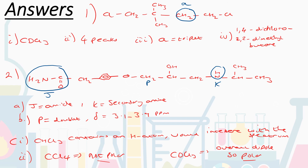For the IUPAC name of compound J: find the longest carbon chain — four carbons, so based on butane. Numbering from left to right gives the lowest numbers for substituents: chlorine on carbons 1 and 4 gives 1,4-dichloro. Two methyl groups on carbon 2 gives 2,2-dimethyl. Naming alphabetically: the full name is 1,4-dichloro-2,2-dimethylbutane.